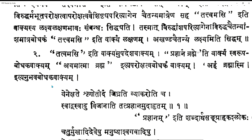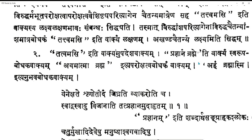Prajnanam Brahma iti vaakyam is a Svarupa Bodhaka vaakyam — what is the Svarupa of Brahma? When placed in the Shishya bhava as Shvetaketu, with Bhagatyaga Lakshana you land on Shuddha Chaitanya. However, when you are taught Tattvamasi, that is Upadesha vakya; but Prajnanam Brahma reveals the nature of the Brahma Padartha — it is Prajnanam, it is Ananda Rupa, as seen in Prajnanam Anandam Brahma.